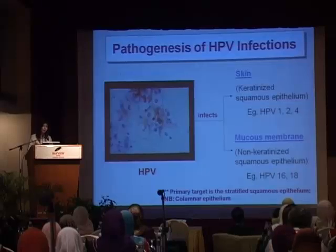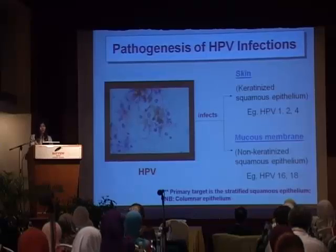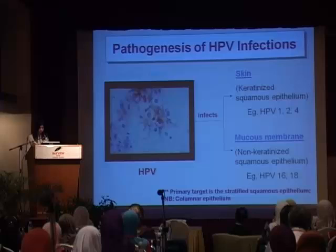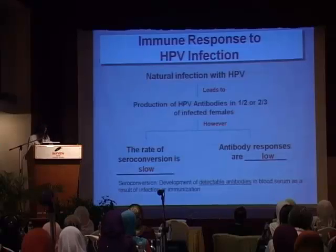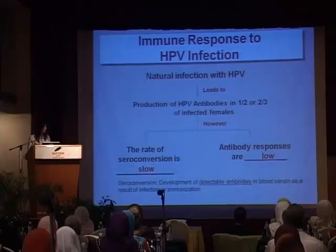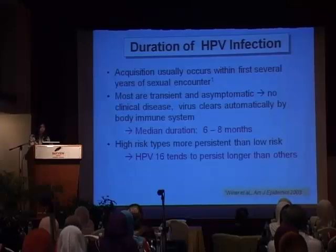So what happens when one gets infected? HPV virus selectively infects the keratinized squamous epithelium of the skin as well as the non-keratinized squamous epithelium of the mucous membrane. Although the primary target is the squamous epithelium, HPV virus can also infect the columnar epithelium. When the initial infection occurs, it will lead to the production of HPV antibodies in some — or about two-thirds — of infected individuals. However, the rate of seroconversion is slow and the antibody responses are very low.